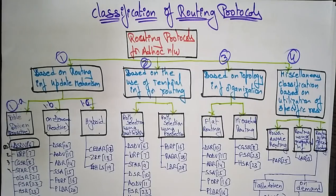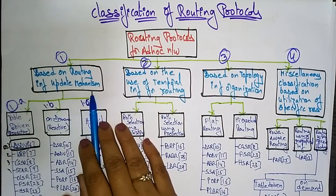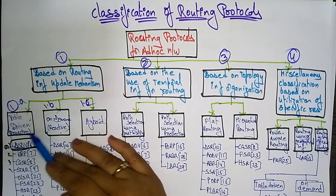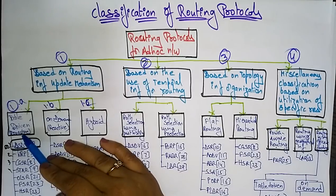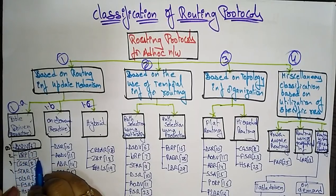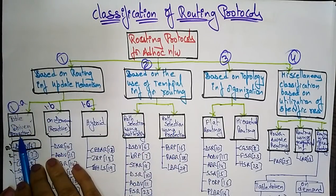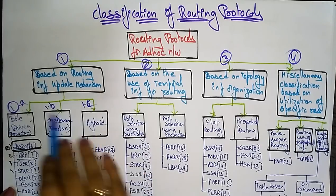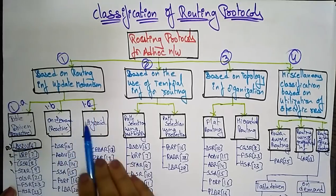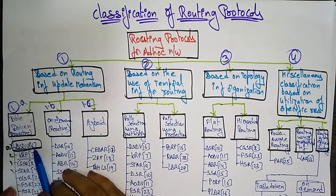Welcome back students. Let's continue with the classification of routing protocols for ad hoc networks. In the previous video I explained the first category based on routing information update mechanisms — table-driven, that is proactive routing protocols. I explained about DSDV. Now let's see what WRP is. We take two examples for each protocol: table-driven, on-demand, and hybrid.